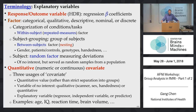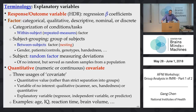Before discussing specific modeling approaches, we need to clarify some terminology. At the group level, regardless of the model — t-test, ANOVA, ANCOVA, general linear model, or linear mixed-effects — we have a variable on the left-hand side, y, which we call the response variable or outcome variable. In older usage, people called it the dependent variable, but that terminology is fading away.